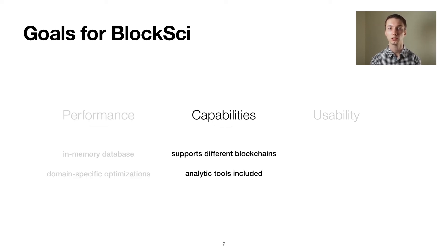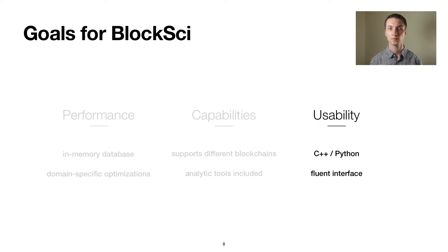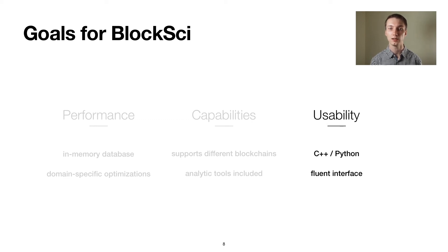As for BlockSci's capabilities, just supporting the Bitcoin blockchain would limit its usefulness. Thus, our goal was to support a few different blockchains. We also include tools for analysis tasks that are common in blockchain research. On the usability front, we offer both a C++ interface for performance-critical analyses, and a user-friendly Python interface that allows anyone with a bit of Python experience to analyze blockchains. To bring the performance of this interface closer to that of the C++ interface, we have developed a Fluent interface that allows the user to specify advanced queries in Python that are then executed in C++.